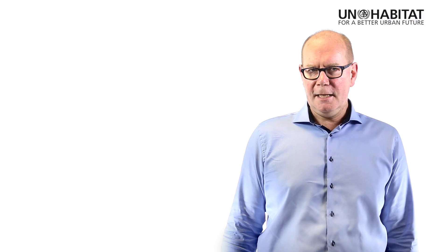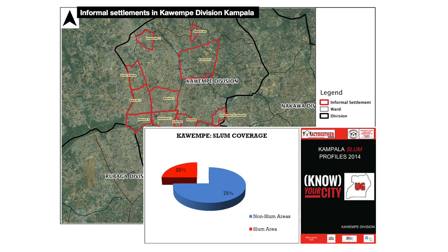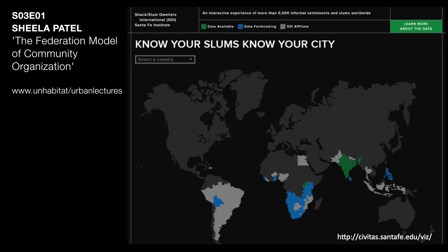Moving to participatory slum mapping, it's built on local knowledge, which makes it extremely powerful. In the case of Kampala, Shack/Slum Dwellers International has been working together with ACT Together and other local NGOs to produce a slum profile of the city, providing maps and generating statistics. This example is discussed further in the lecture of Sheila Patel recorded in this series. This data from Kampala will be made available together with data from other participating cities, so access to slum data will gradually improve over time.